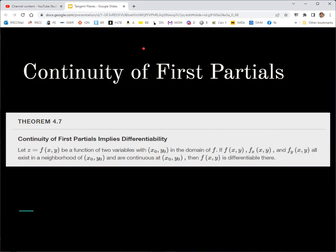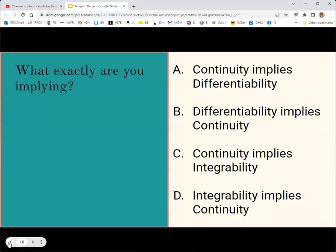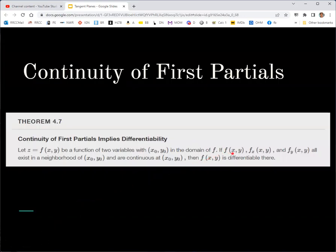What's the connection between continuity and differentiability for functions of two variables? If you have a function of two variables and the function and its first order partial derivatives are continuous, then the function is differentiable. We just looked at saying that continuity does not imply differentiability. We're not saying that here. Continuity of F doesn't mean it's differentiable, but continuity of F and its partial derivatives - if all three of those are continuous, then the function is differentiable.